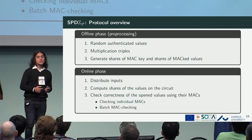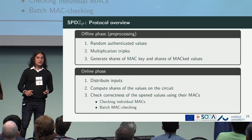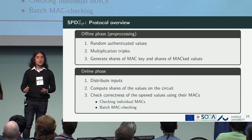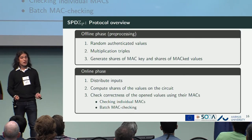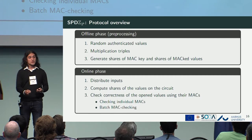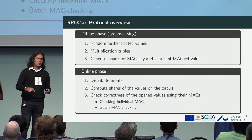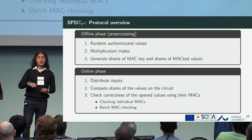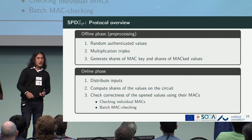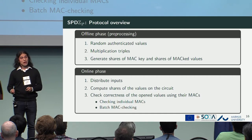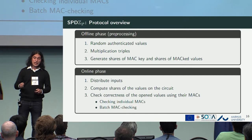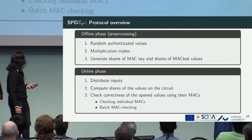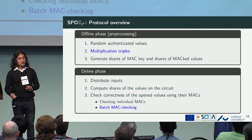Here is the protocol overview. There are two phases: an offline phase and an online phase. In the offline phase, you preprocess random authenticated values for the input phase, generate multiplication triples for the multiplication gates, generate shares of the MAC key alpha, and implement functionality to authenticate values as needed. In the online phase, you distribute inputs using the preprocessed values, compute shares of circuit values gate by gate — addition gates are free, multiplication gates use the triples — and check correctness of every opened value, either individually or via batch MAC checking.